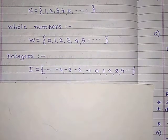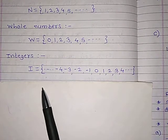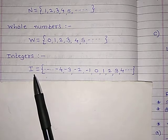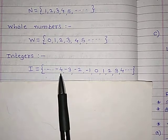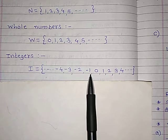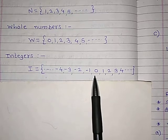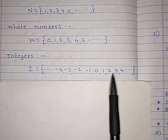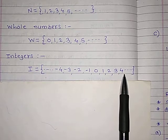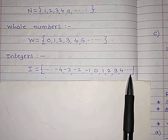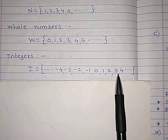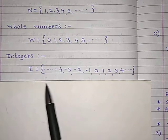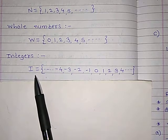Now, integers. Integers include all the negative numbers — that is minus 4, minus 3, minus 2, minus 1 — then 0, and all positive numbers, that is 1, 2, 3, 4 and so on. Integers include all the negative numbers, 0, and all the positive numbers, and integers are indicated by the letter I.